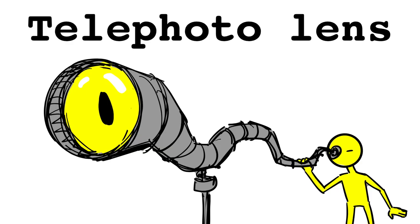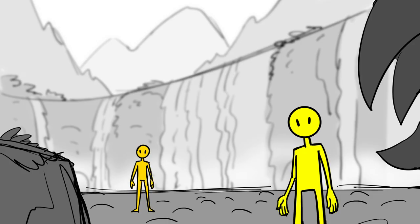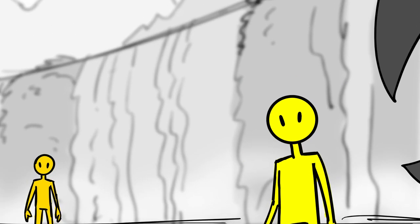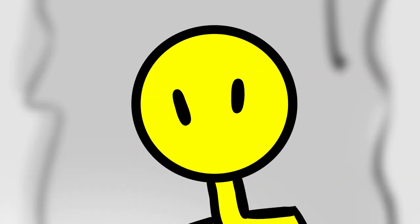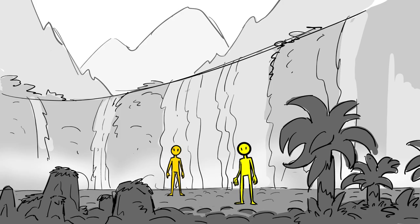Narrow-angle lens, also called telephoto lens. The narrow-angle lens magnifies a small portion of the view in front of the camera. This lens is best used for close-ups because it shows less detail in the frame and there's less lens distortion. Narrow lenses can also be used for wide shots, but the image will look taken from far away rather than from nearby.